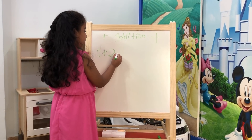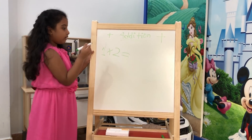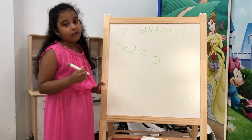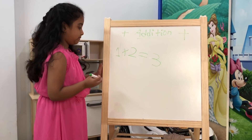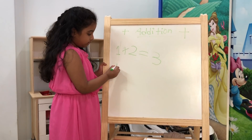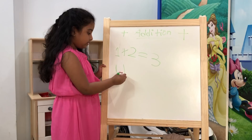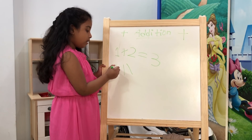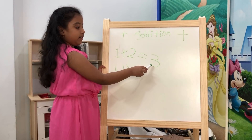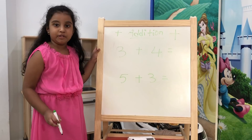One plus two equals three. I will tell you how it counts. Here is one standing line. Here is two standing lines. One, two, three — three.